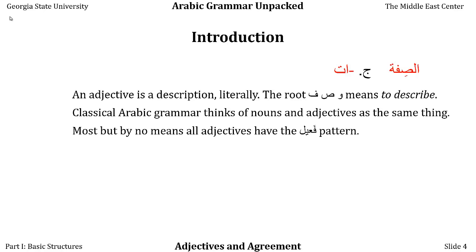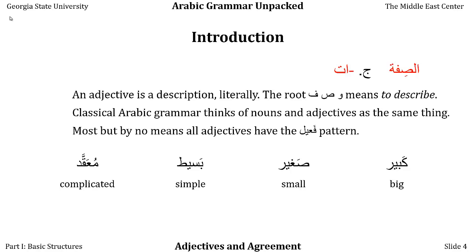Most simple adjectives in Arabic have the fa'il pattern, or wazn. Kabir is big, saghir is small, basit is simple. All three of those words have the same wazn or pattern: fa'il. But not all adjectives have this pattern. Basit is simple, but mu'aqqad — literally tied up in knots — is complicated. Usually, especially in initial lessons, you'll see most of your adjectives having the fa'il pattern.